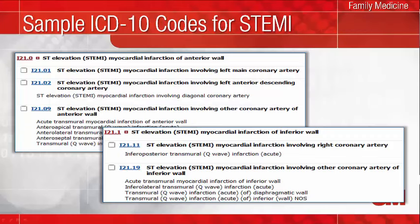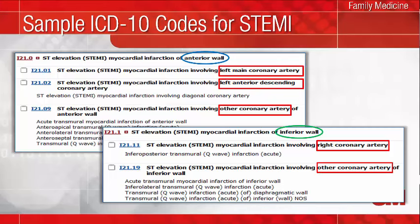Here are some examples of ICD-10 codes for a STEMI. Note that the codes are first categorized by anterior or inferior wall, then additional specificity is provided for the coronary artery. Also note that certain terms crosswalk to certain other codes. For example, a transmural myocardial infarction of the inferior wall is coded to other coronary artery. The key here is describing the MI as specifically as you can regarding the type and location in terms of the artery, wall, or other site affected.